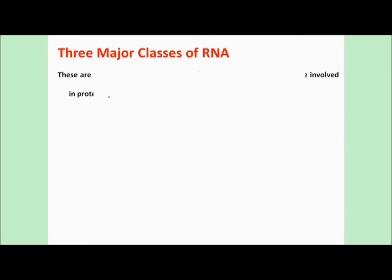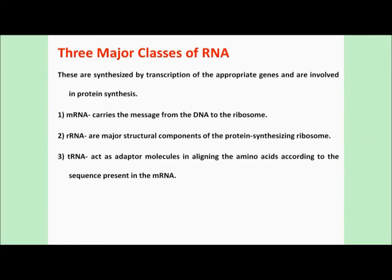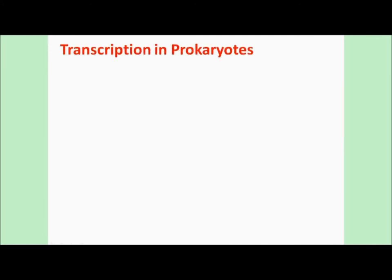The three major classes of RNA are all involved in the production of protein. First, mRNA — messenger RNA — carries the message from DNA to the ribosome for protein synthesis. Second, rRNA — ribosomal RNA — is the major structural component for protein synthesis. Third, tRNA — transfer RNA — acts as an adapter molecule which aligns amino acids according to the sequence present in the mRNA for the synthesis of protein.